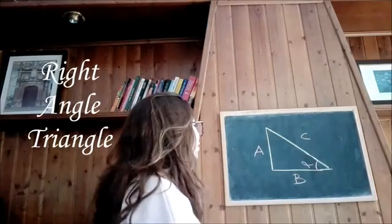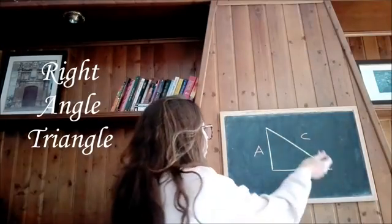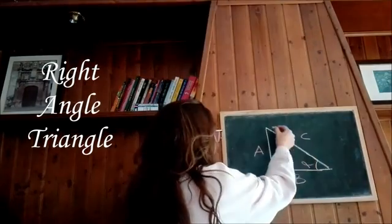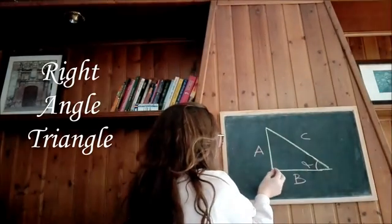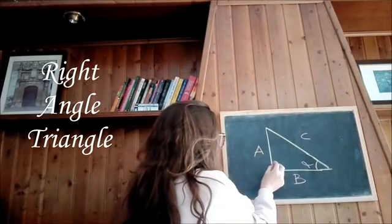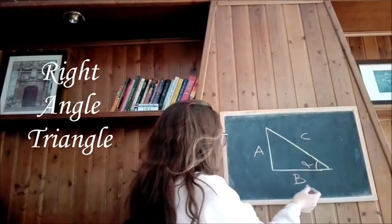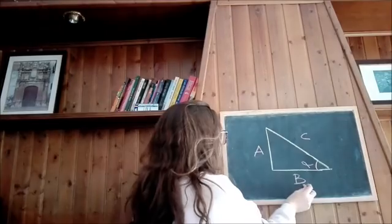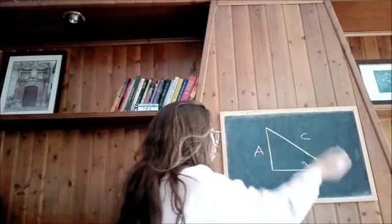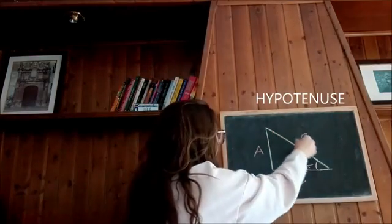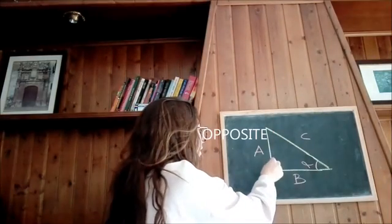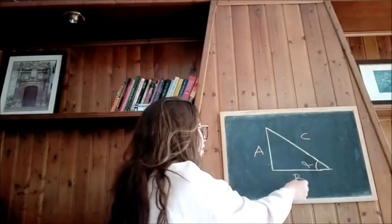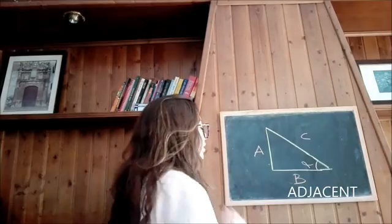Right angle triangle. We're going to call this side C, this side is going to be A, and this side is going to be B. This side is the hypotenuse, this side is the opposite, and this side is the adjacent.